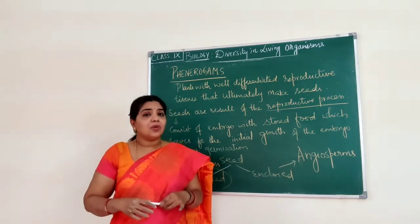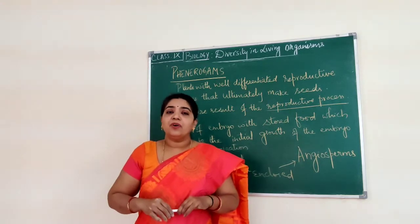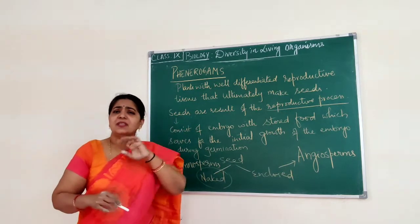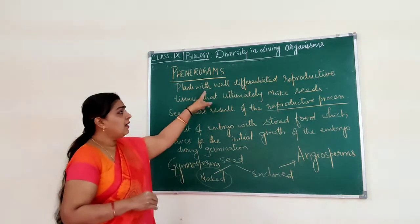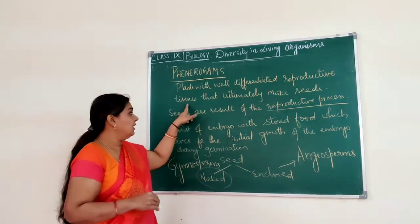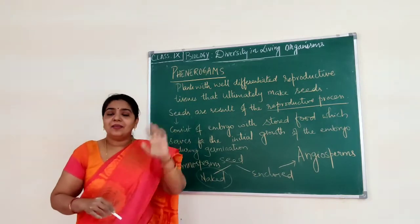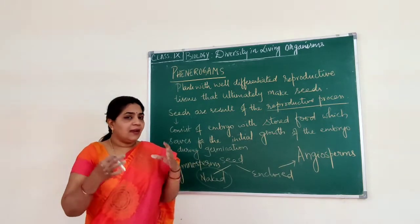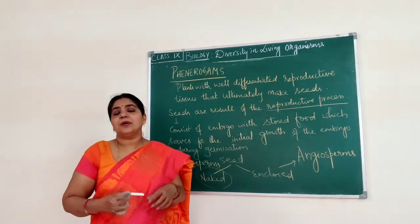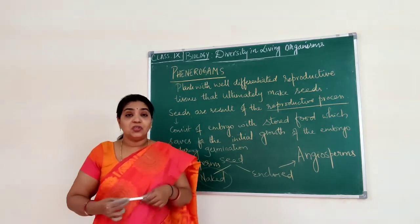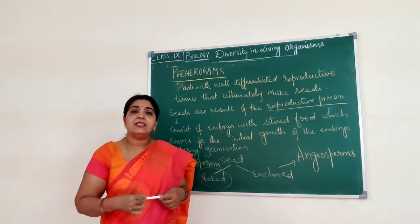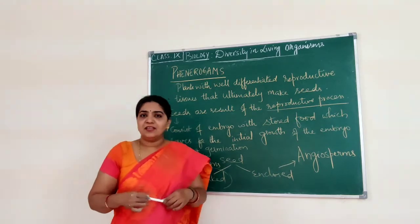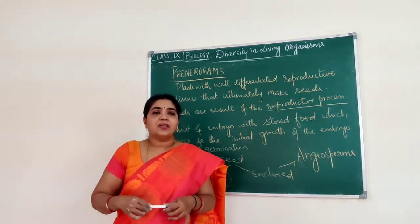Next we will see phanerogamy, that is gymnosperms and angiosperms. Phanerogamy plants have well-differentiated reproductive tissue that ultimately produces the seeds. They produce seeds and we can see the reproductive part, which is the flower in the case of angiosperms. Seeds are the result of the reproductive process.